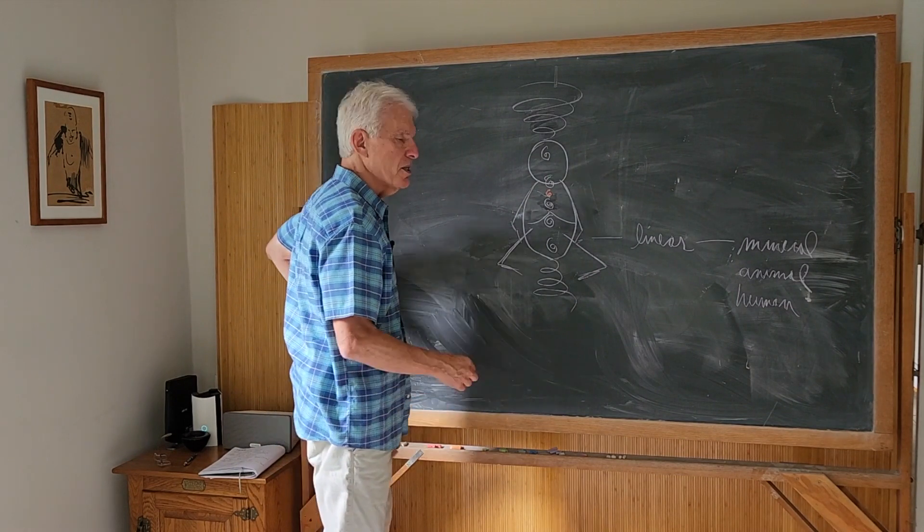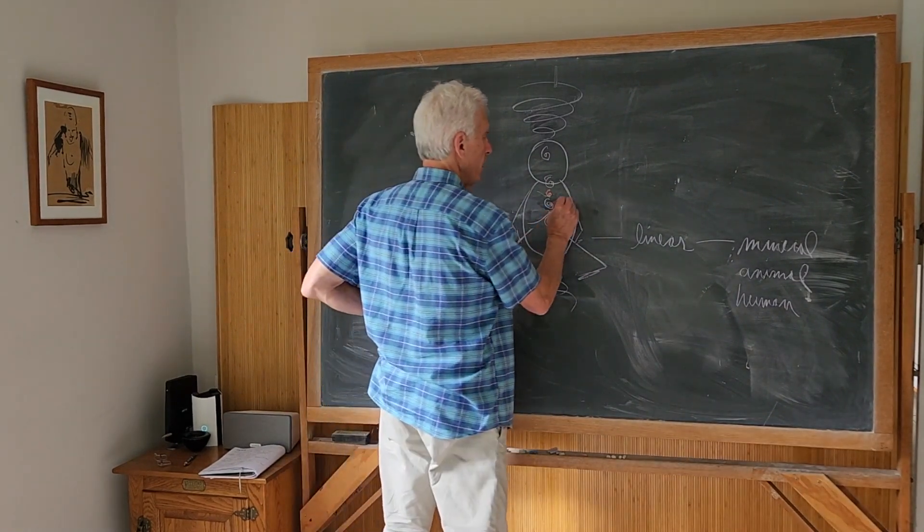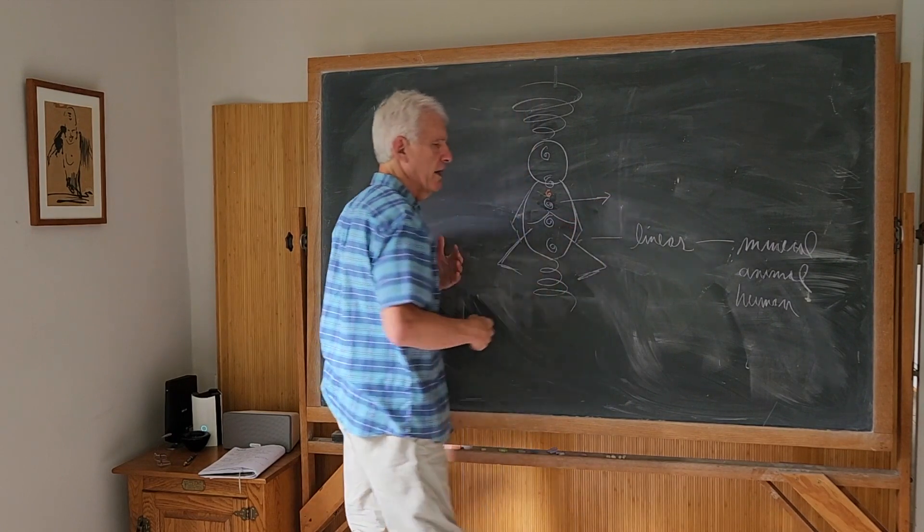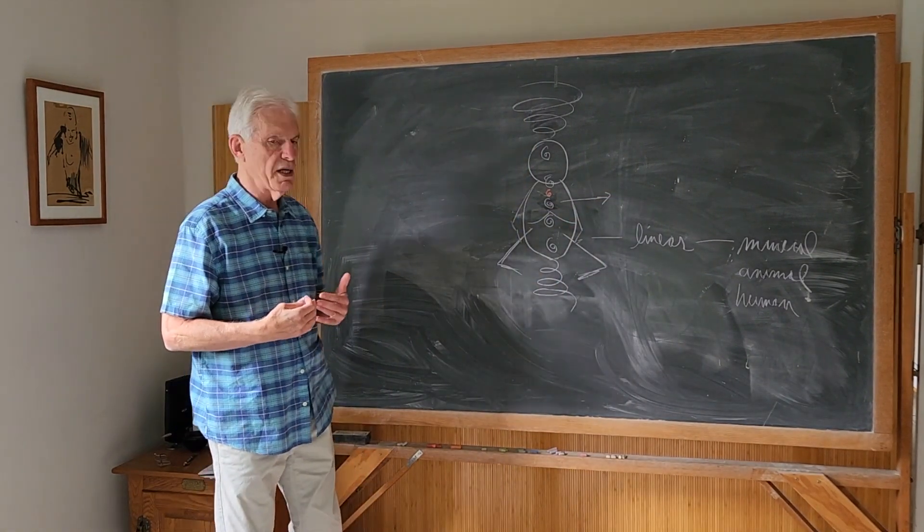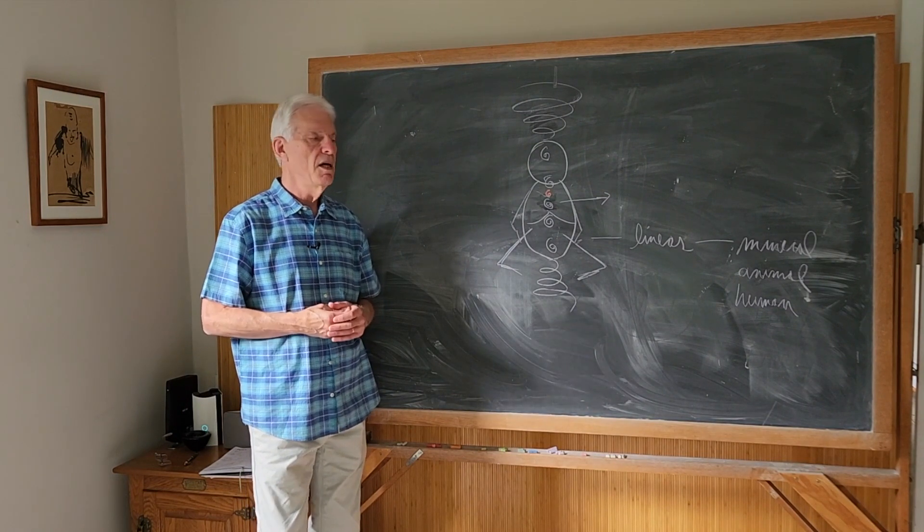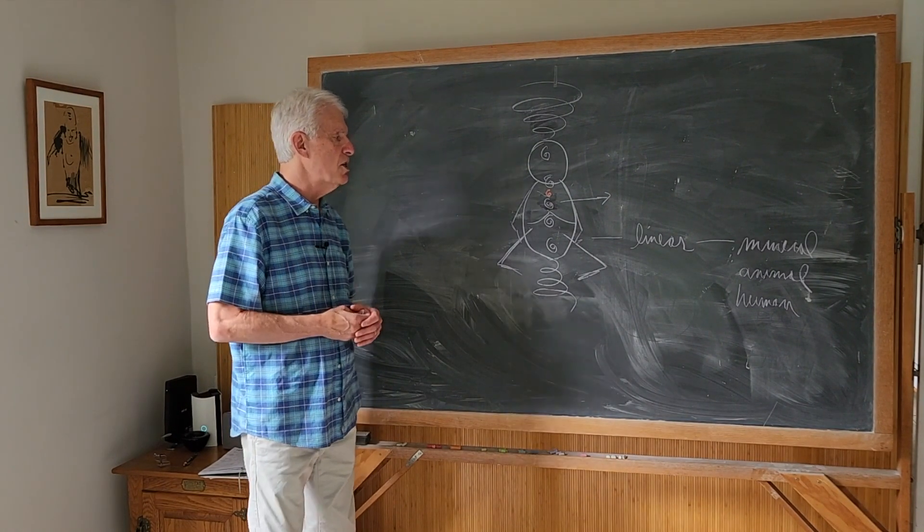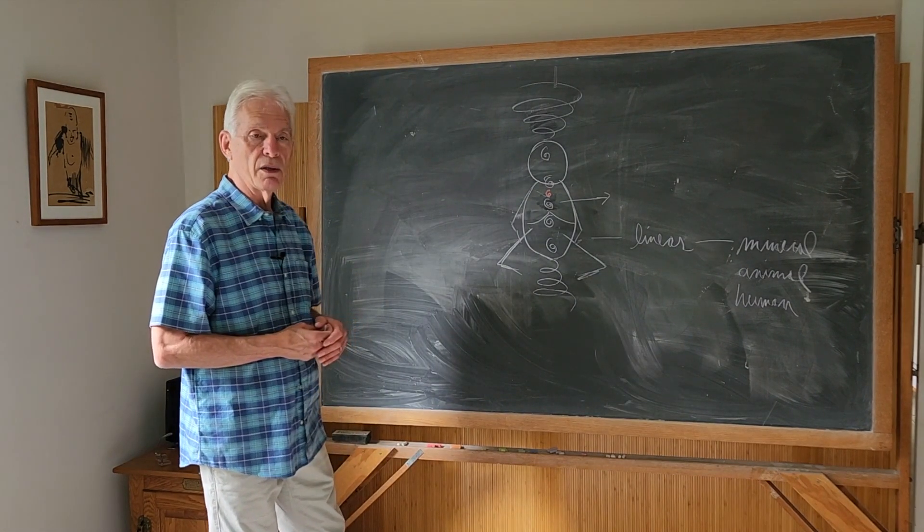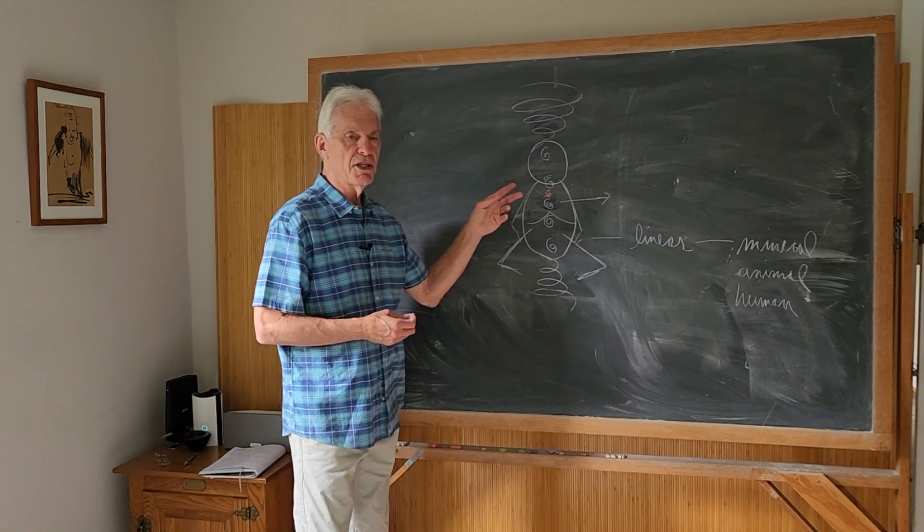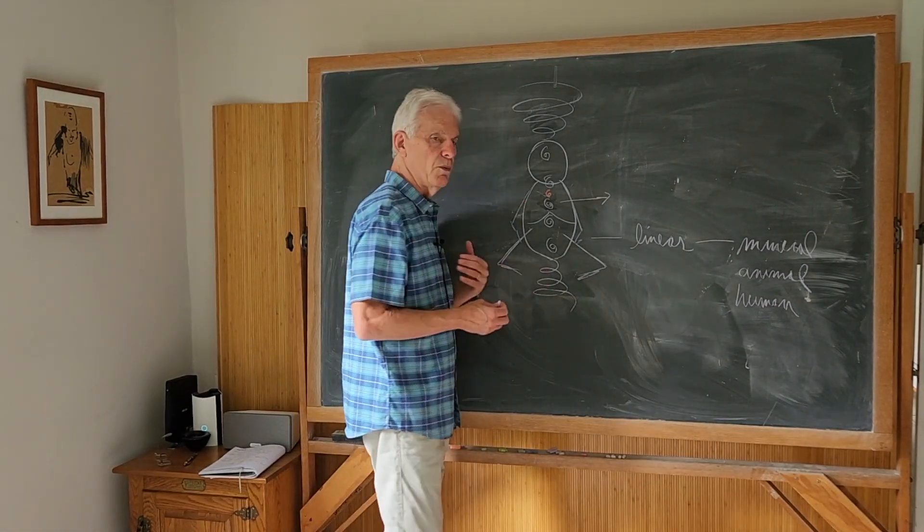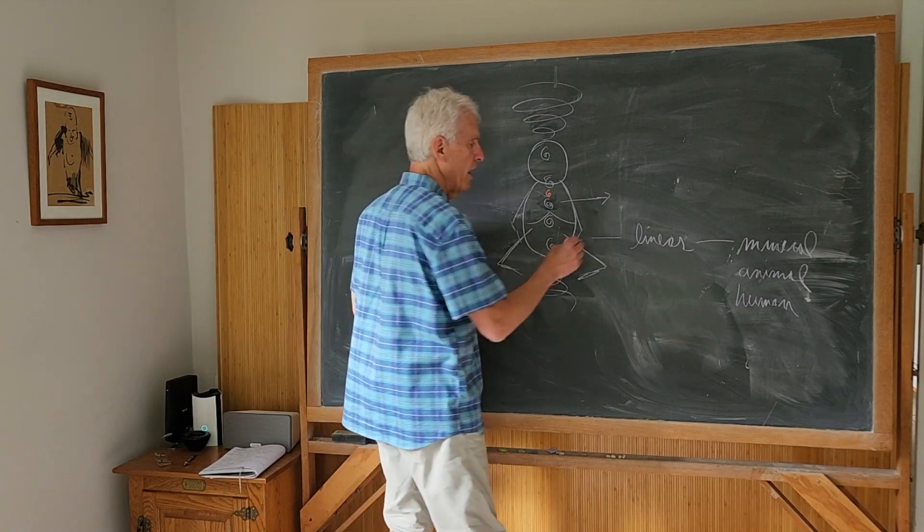Now, in the middle of all this, we have the heart center. There's various information sources that say that this fourth center or the heart center has this characteristic or that characteristic. Another thing that is usually identified is the male aspect.